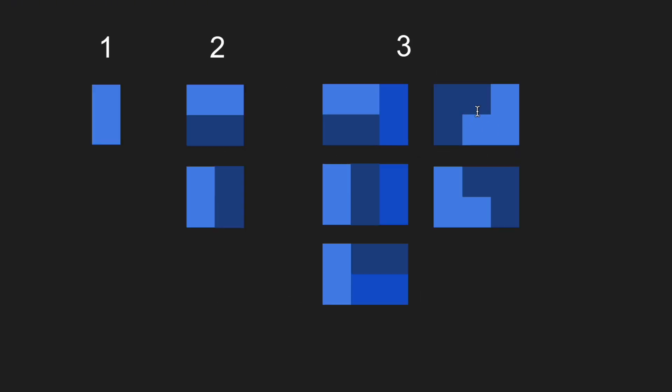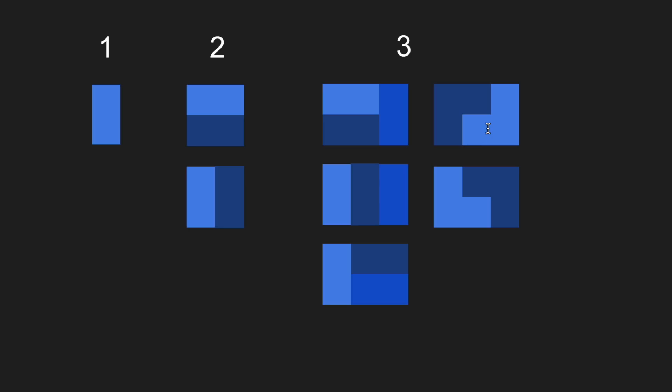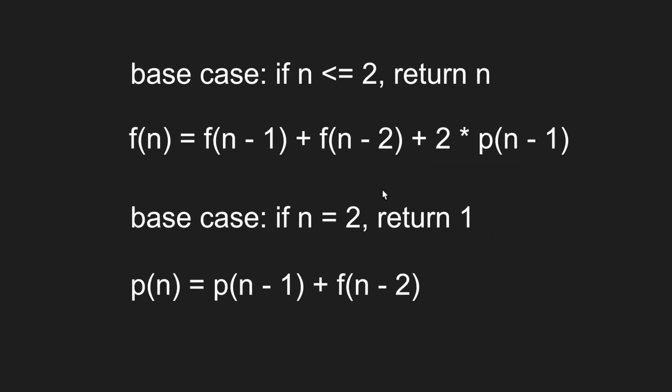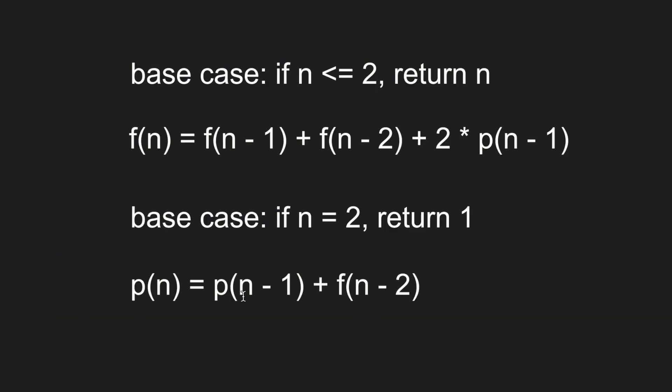So if we look right here, n is equal to two, where at column two is partially filled. So then we will return one. But then we multiply by two over here because for every partially filled column, there's always a way to mirror it. And for the recursive case of p, it will be p of n minus one plus f of n minus two. Because if we can look at a larger example, the only way to keep it a partially filled column will be either to involve a horizontal domino or will it be involving a tromino.